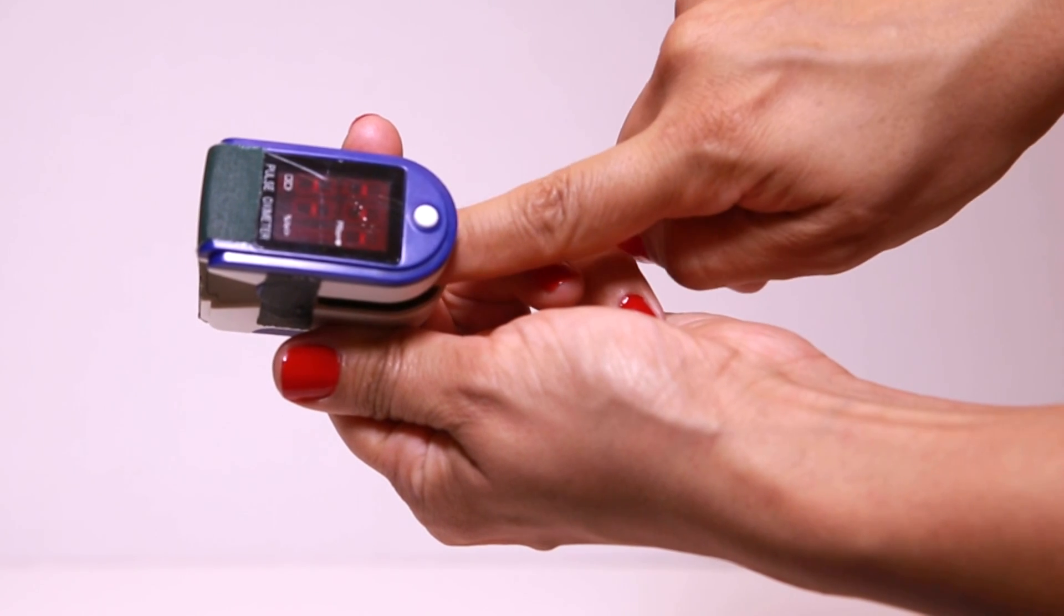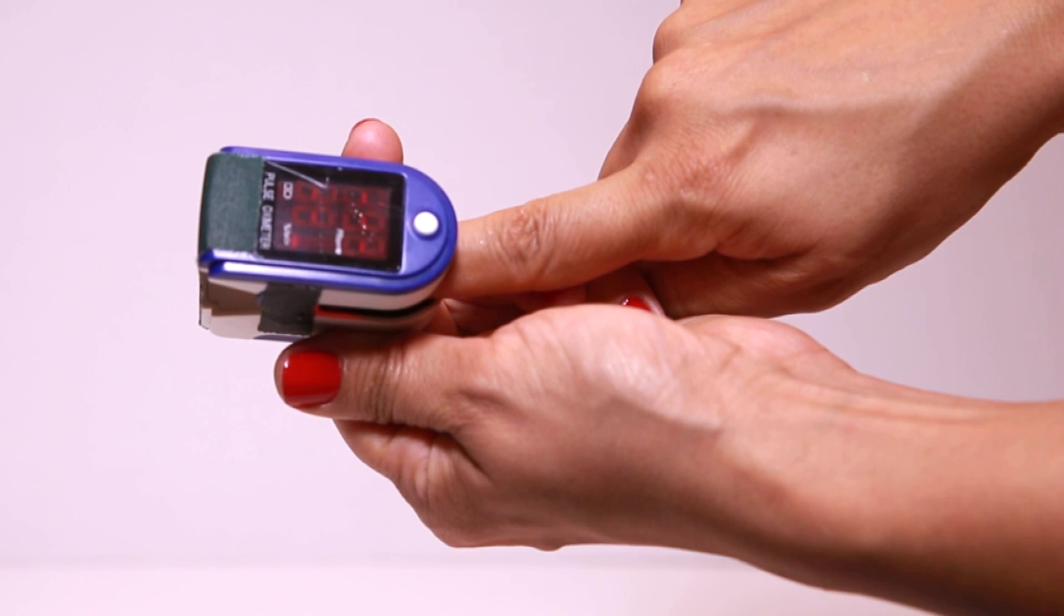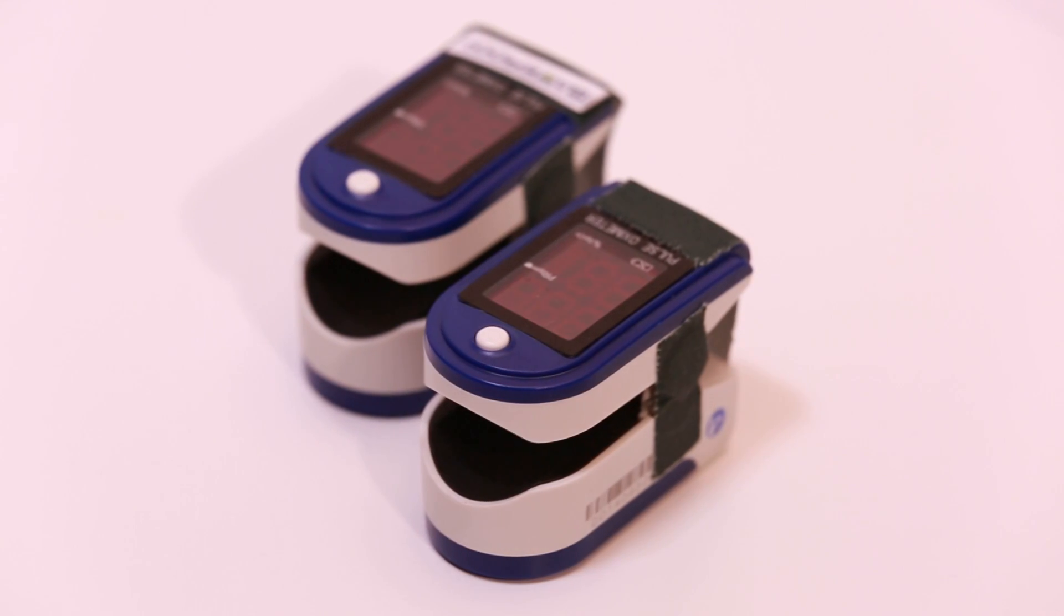For those who may not be familiar, a pulse oximeter measures both the amount of oxygen in the blood and the heart rate.